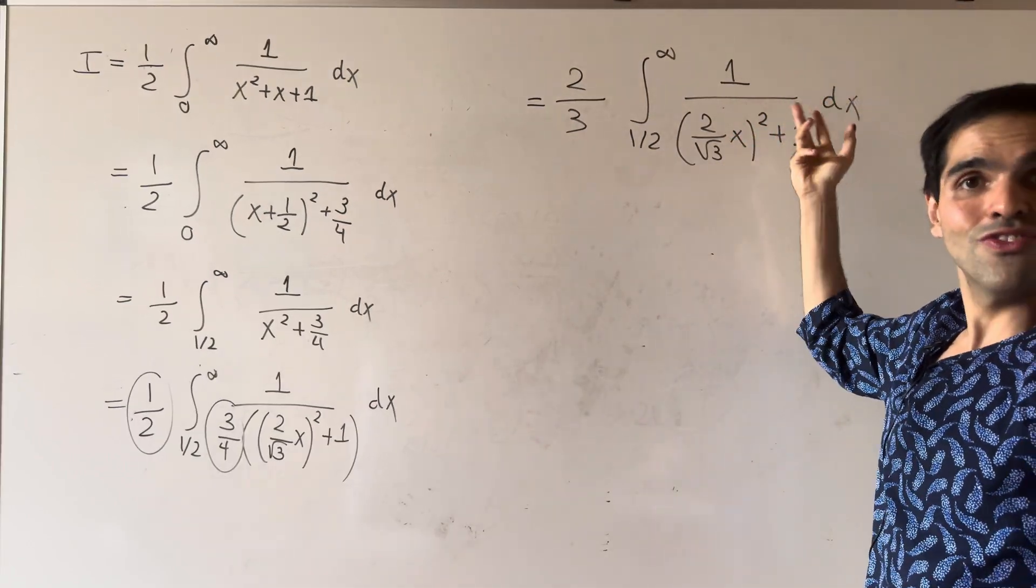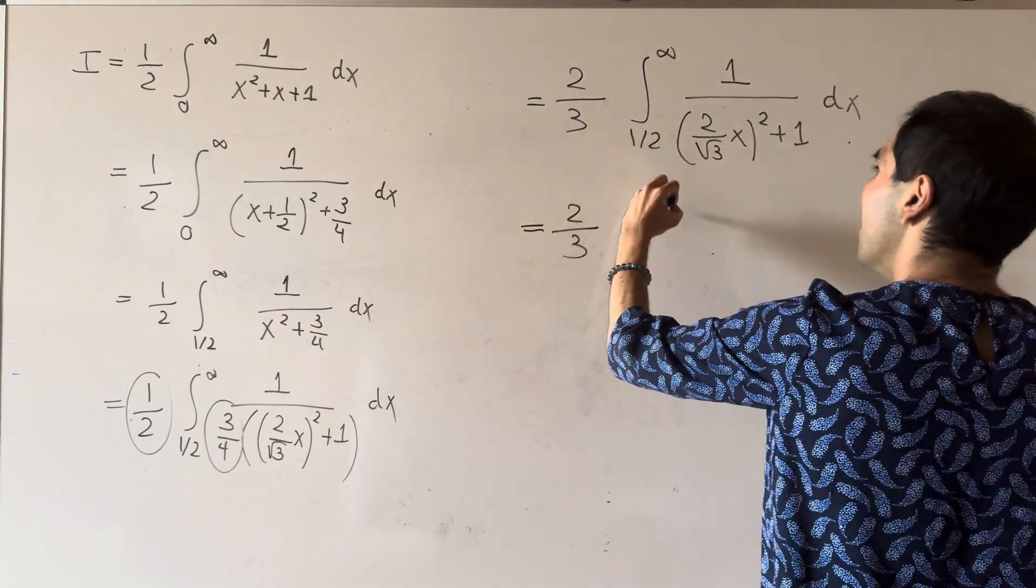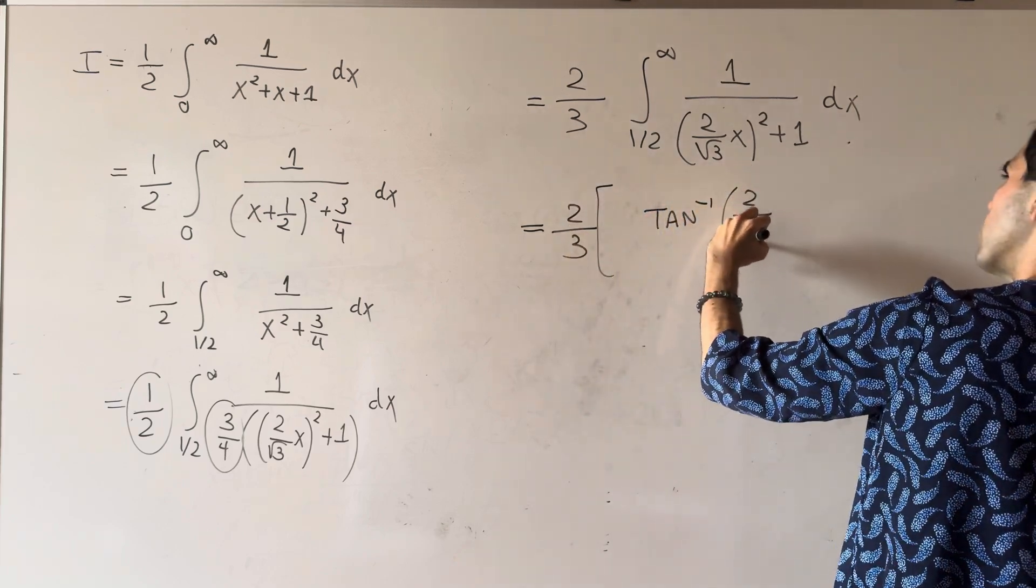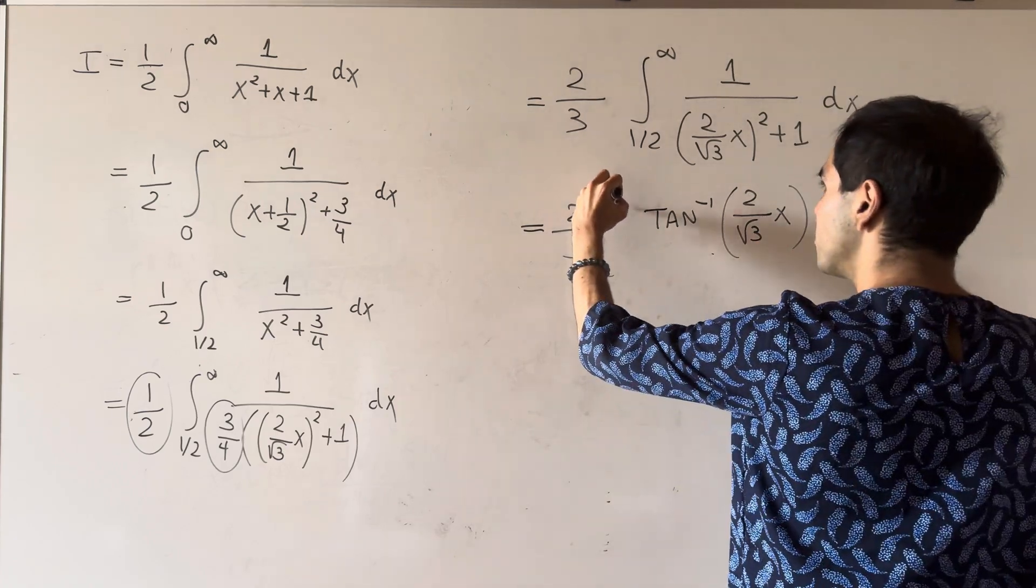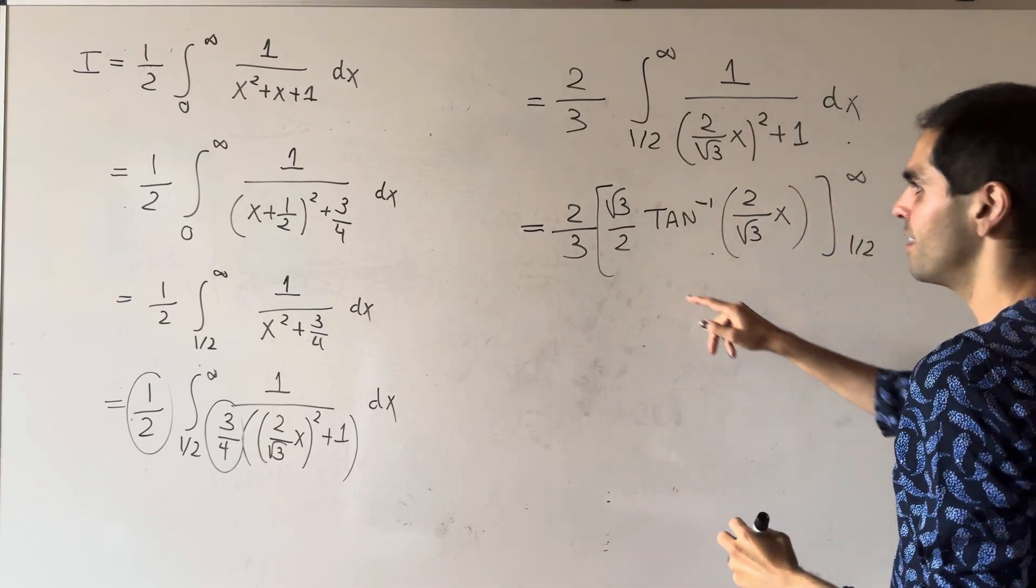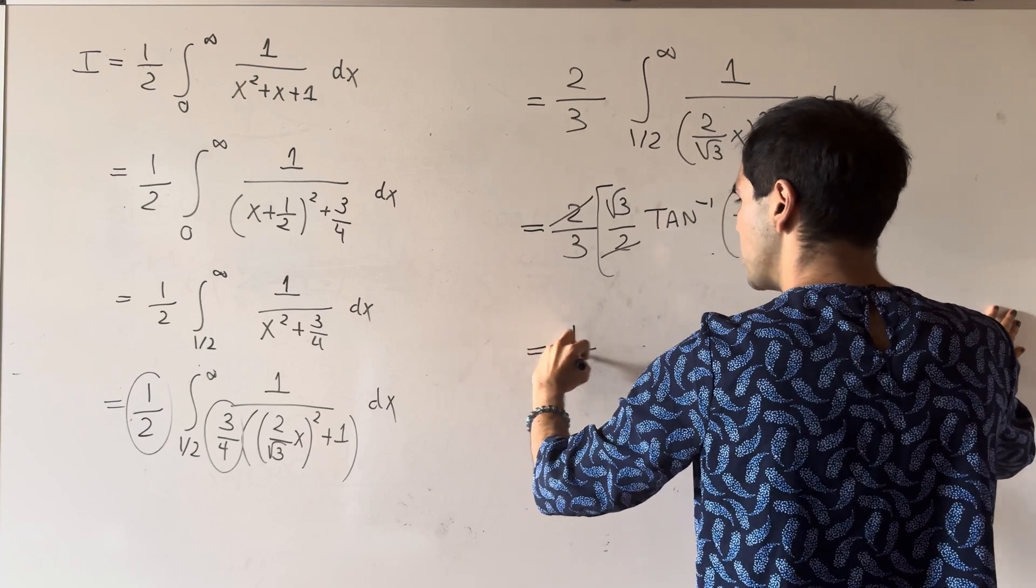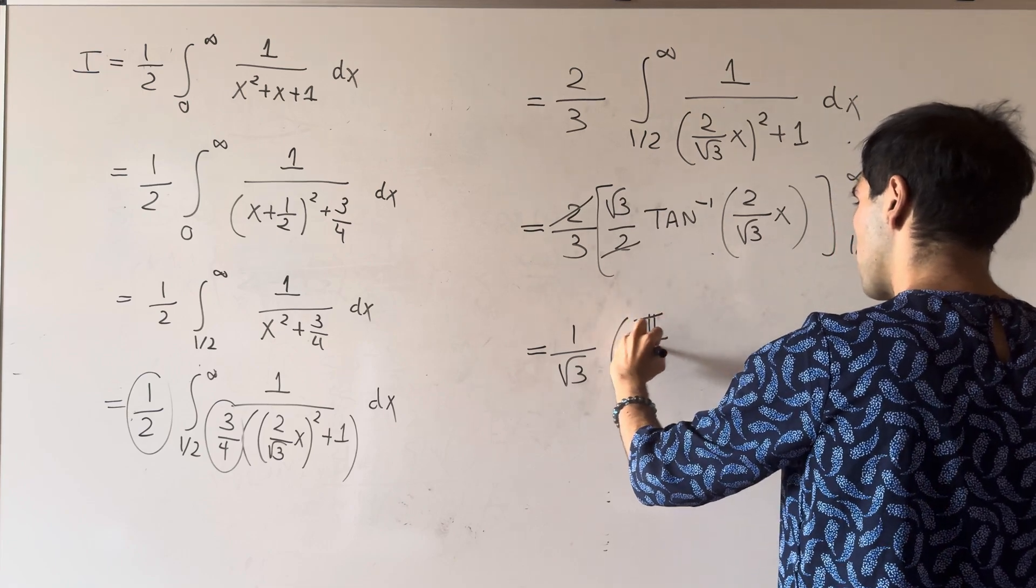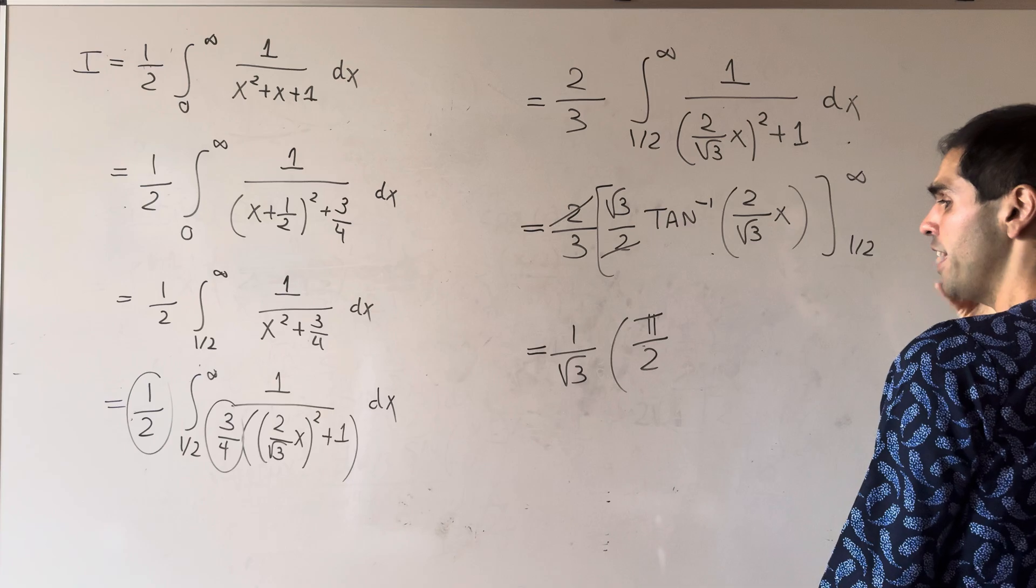And while this smells very arc tangent-y, a very good smell, we get arc tangent of 2 over square root of 3 x. But because of the chain rule, we need a square root of 3 over 2, and that is from 1 half to infinity. This 2 cancels out. This becomes 1 over square root of 3. Arc tangent of infinity is pi over 2, and then arc tangent of 1 over square root of 3 is pi over 6.